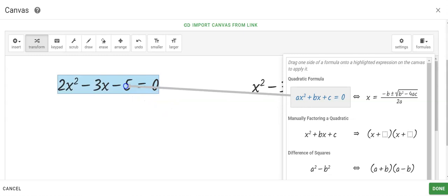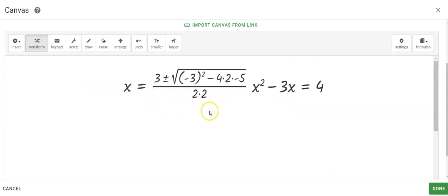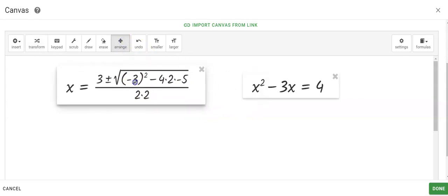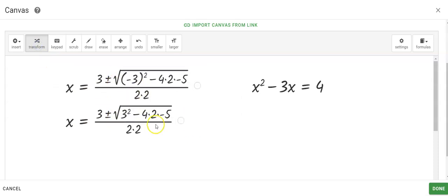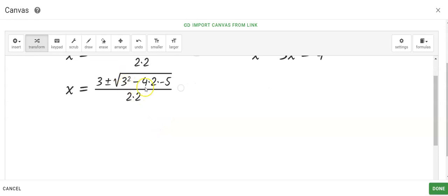I'm going to drag it over here, and notice it's going to change that to the quadratic formula with all my variables in it. I'm going to arrange to pull that back over here, and then the rest of the process is to simplify. So you can click on there to do your exponent, you can click there.